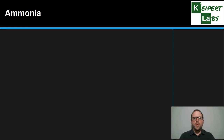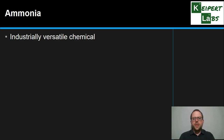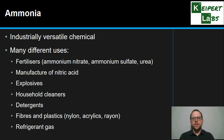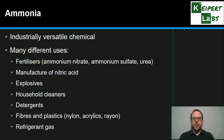So firstly, what is ammonia used for? Well it's an industrially versatile chemical — that is, something that we produce in massive quantities in today's society because we use it for so many different things. Predominantly we're thinking about fertilizers like ammonium nitrate, ammonium sulfate, or urea for agriculture.